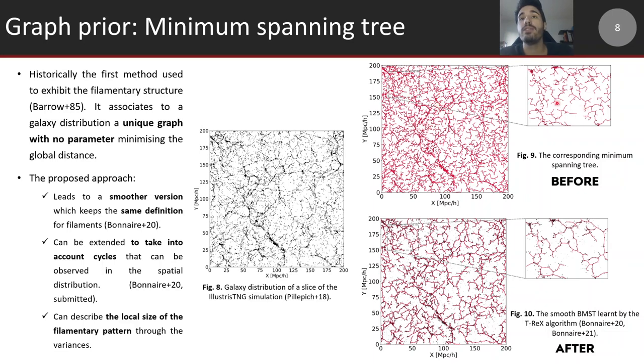You can see that locally it is very spiky and it does not really reveal the local geometry of the underlying manifolds that generated the data. People have been using it in cosmology and defined filaments as branches of the graph. Here is the version you obtain using the regularized mixture model that I've just presented, that we entitled T-ReX for tree-based ridge extractor.